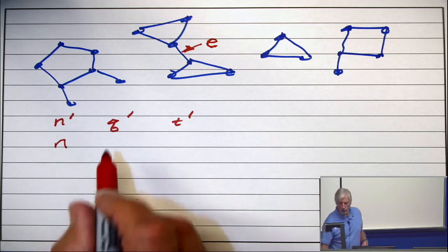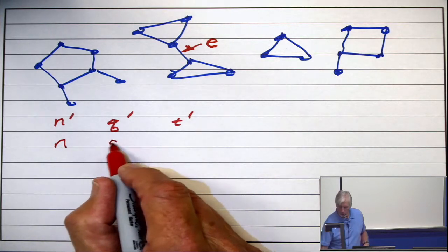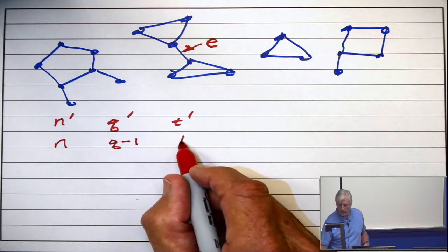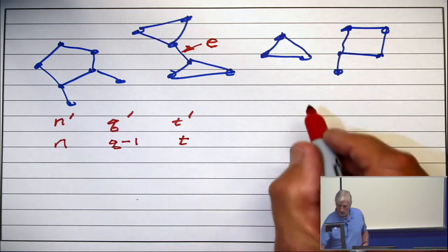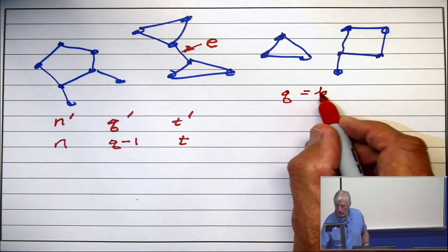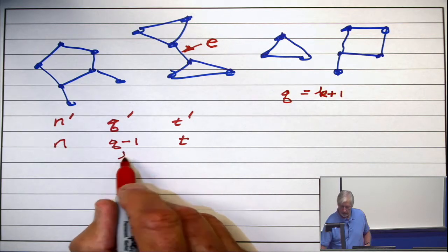What is q prime? It's the old q minus 1. What is t prime? t prime is the same as t. And remember, we're saying that q is k plus 1. So q minus 1 is k.